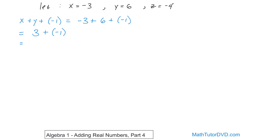Now we're adding the positive 3 plus the negative 1. We're again adding mixed signs, so we subtract. 3 minus 1 is 2, and it takes the sign of the bigger absolute value, which is this number. So the answer is going to be positive 2, and that's the answer.